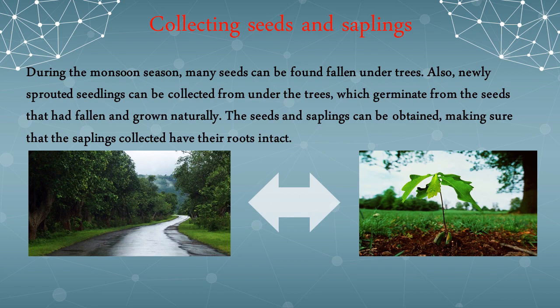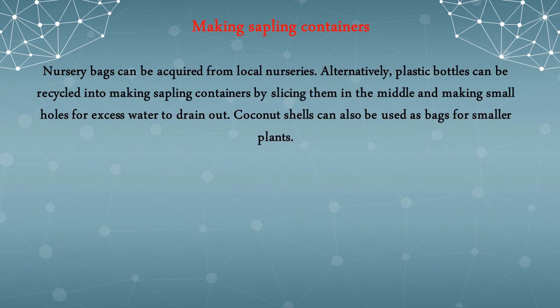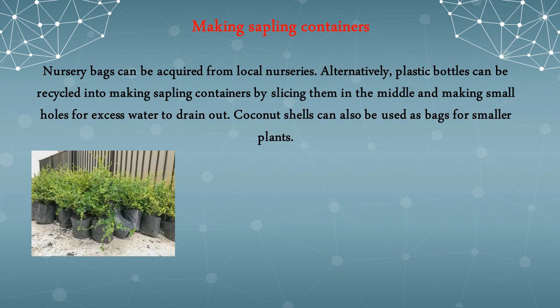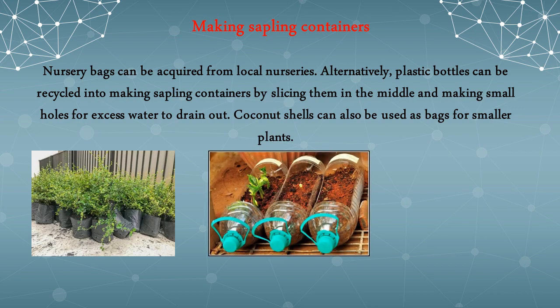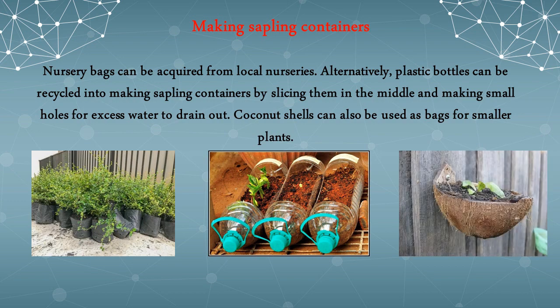The second step is making sapling containers. Nursery bags can be acquired from local nurseries. Alternatively, plastic bottles can be recycled into sapling containers by slicing them in the middle and making small holes for excess water to drain out. Coconut shells can also be used as containers for smaller plants.